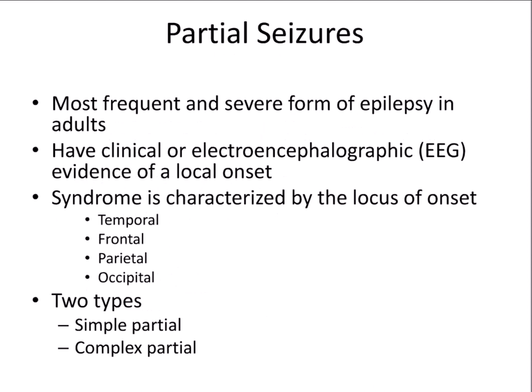The next few slides will talk about different kinds of seizures, and as mentioned, each kind is detailed in video form in the corresponding PowerPoint online. The first kind are known as partial seizures — these are the most frequent and severe form of epilepsy in adults. They have EEG evidence of a local onset, and the syndrome is characterized by the locus of onset. For example, if EEG abnormalities are seen in the temporal region, it's a temporal partial seizure, and similarly for frontal, parietal, and occipital regions. There are two kinds of partial seizures: simple partial and complex partial.